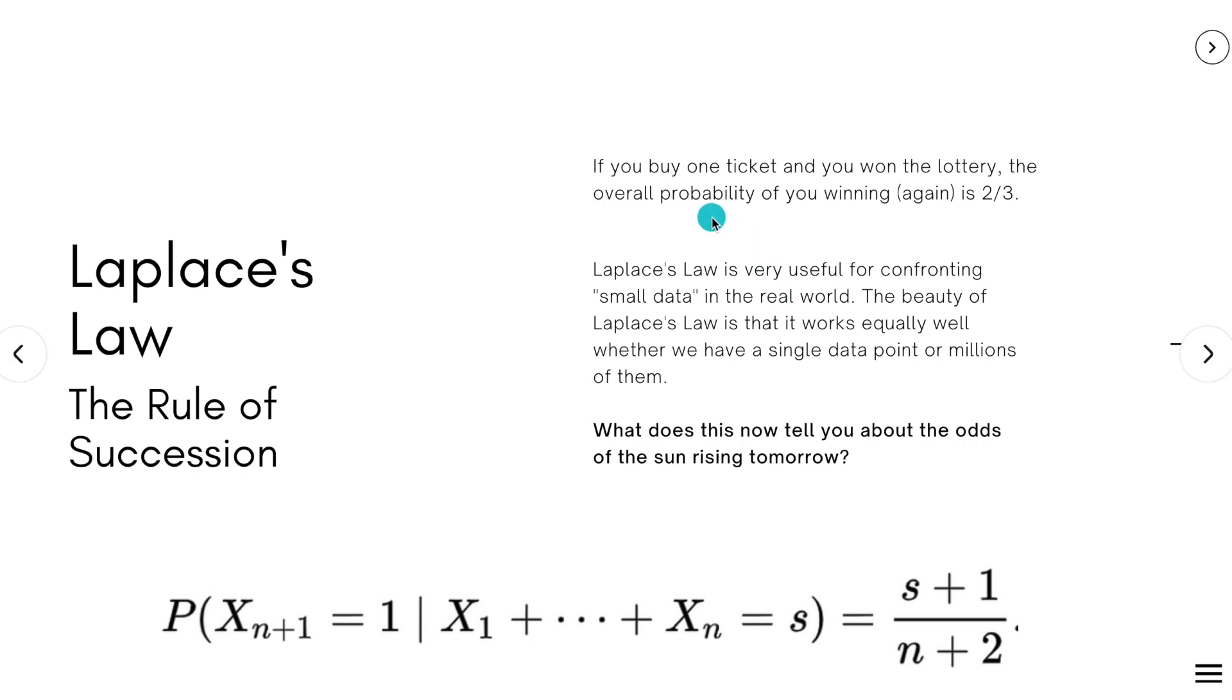So it's something like, even if you had just a single data point, like if you buy one ticket, so the number of trials in this case is just one and the number of wins is one again. So you just plug in one and one here. So you get one plus one divided by one plus two. So the overall probability of you winning again is 67%.